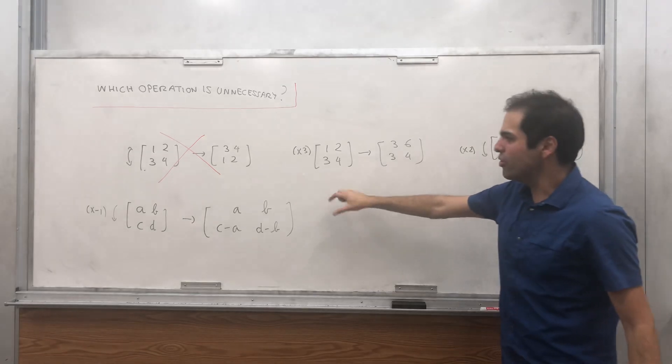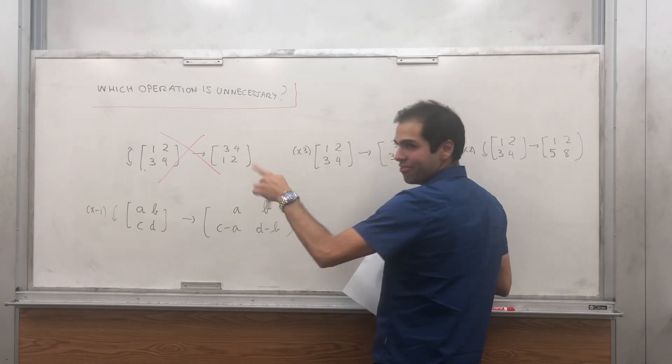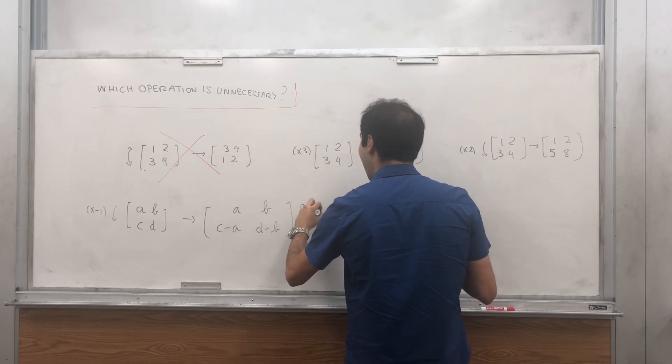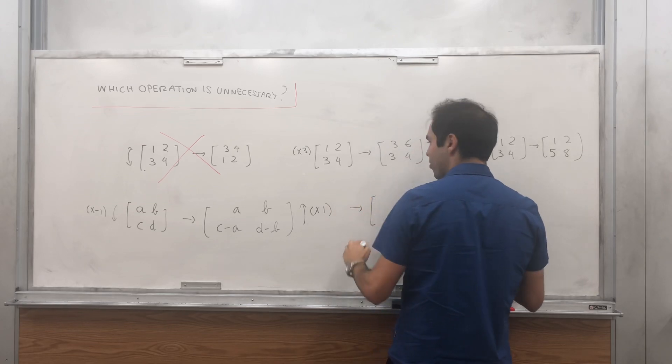And then ideally, you would like to have C, D, A, B. So let's now, and again, we're not allowed to interchange rows, let's add the second row to the first row.